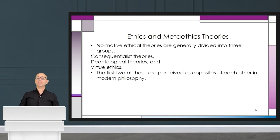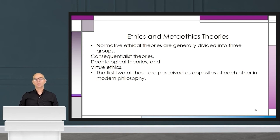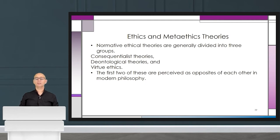Normative ethical theories are generally divided into three groups: consequentialist theories, deontological theories, and virtue ethics. The first two — consequentialist and deontological theories — are perceived as opposites of each other in modern philosophy.